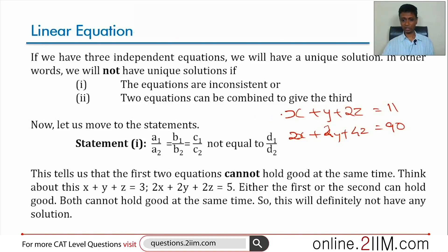This tells us that these two equations, even standalone, cannot hold good at the same time. If x plus y plus 2z is 11, then 2x plus 2y plus 4z has to be 22. If that is given to be 90, that means there is no value of x, y, z that will satisfy both. I don't even have to worry about the third.